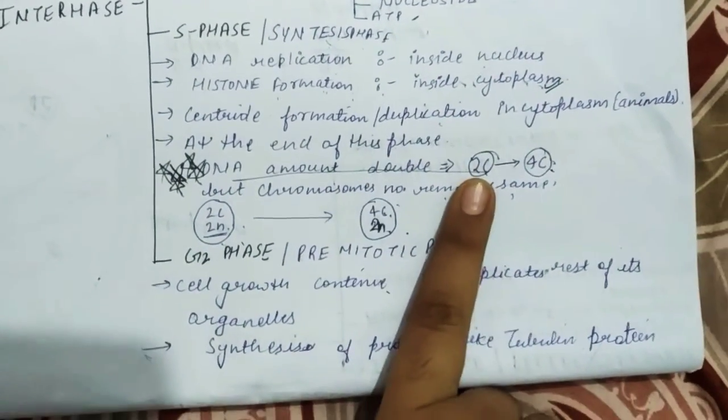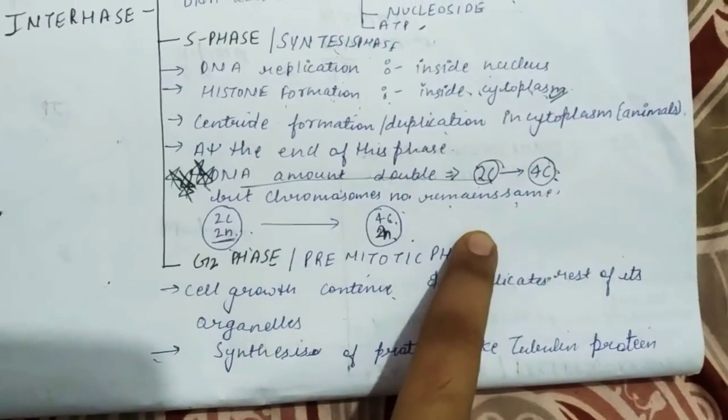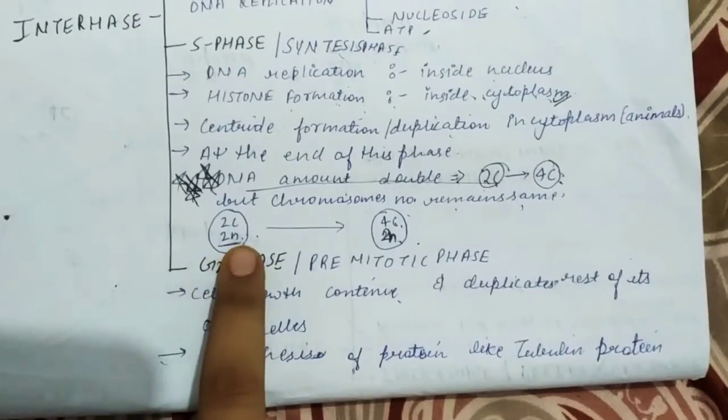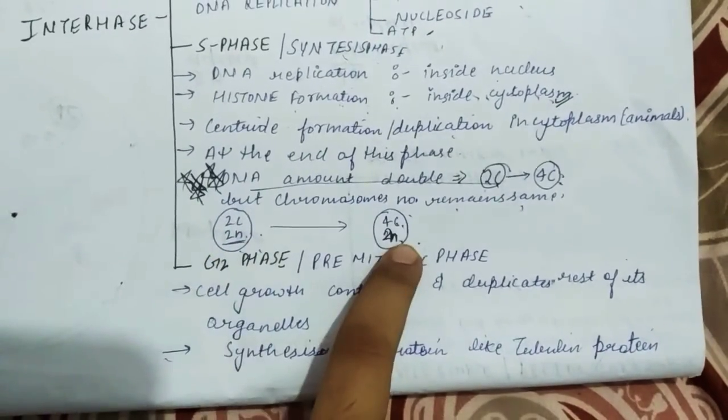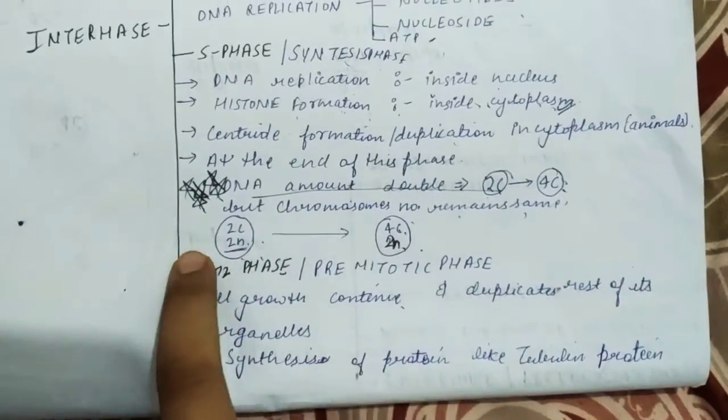This is S phase. At the end of this phase, we can see that DNA amount is double—from 2C to 4C. The chromosome number remains exactly the same at 2N, but the DNA content is doubled to 4C.